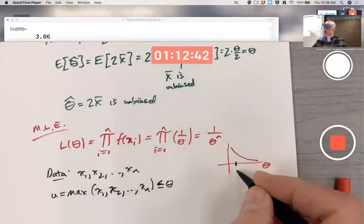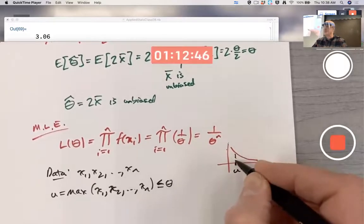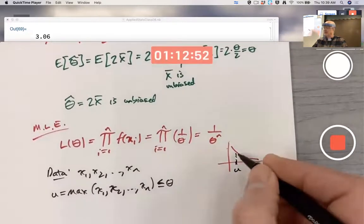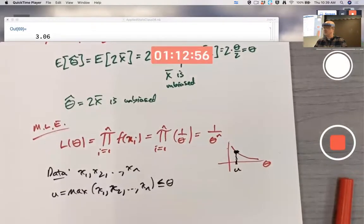So we're really optimizing for theta greater than or equal to little U, whatever that happens to be for the given data. In other words, it does have a maximum at that value of U.